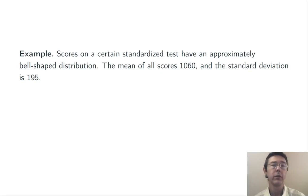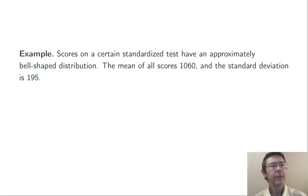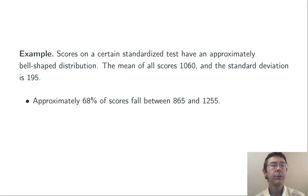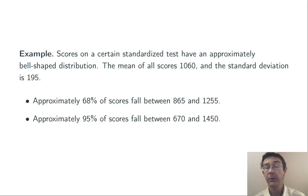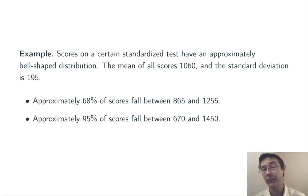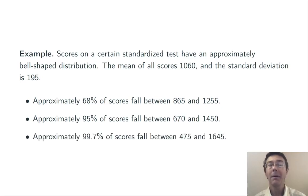Let's wrap up with one quick example using the empirical rule. Scores on a certain standardized test have an approximately bell-shaped distribution with a mean of 1060 and a standard deviation of 195. Using the empirical rule: approximately 68 percent of scores fall between 865 and 1255 — one standard deviation below to one above the mean. Approximately 95 percent fall between 670 and 1450 — that's the mean plus or minus twice the standard deviation. Finally, about 99.7 percent of scores fall between 475 and 1645, within three standard deviations of the mean.